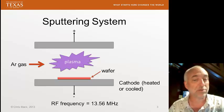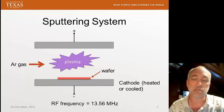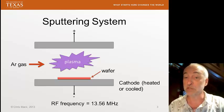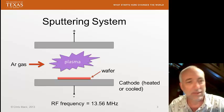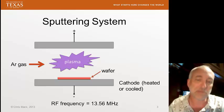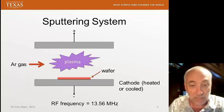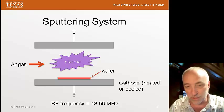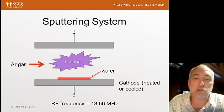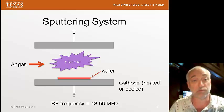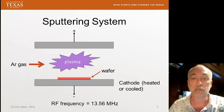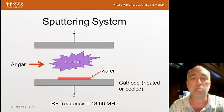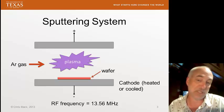The RF frequency is 13.56 MHz for almost all of our plasma etch systems. You might wonder what's so special about 13.56 MHz — maybe some resonant frequency of argon? No, none of that. We use this frequency because this is the frequency the FCC allows us to use. The Federal Communications Commission regulates the use of all kinds of frequencies, and if we arbitrarily picked a frequency, we might interfere with radio broadcasts or other communication channels. The FCC has allocated this frequency for scientific and medical devices that need radio frequency power.